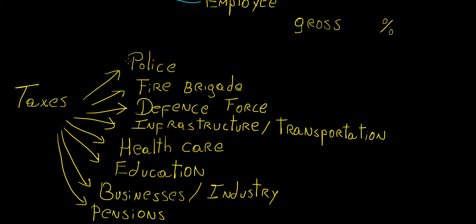One of the main services that we need is the police. We also have the fire brigade, the defense force, and infrastructure, which covers everything related to buildings, bridges, structures — anything that we need to build. And transportation, of course, which includes public transportation: buses, trains, ferries, you name it.